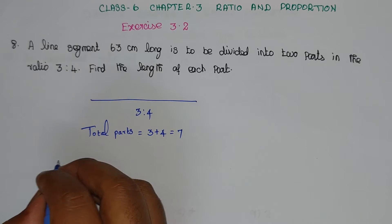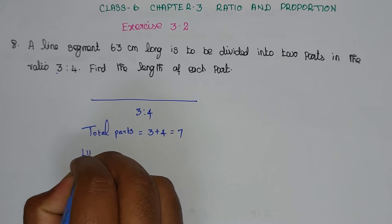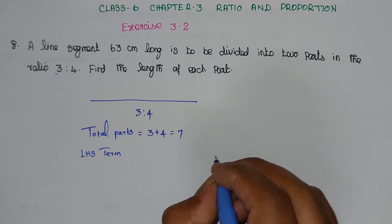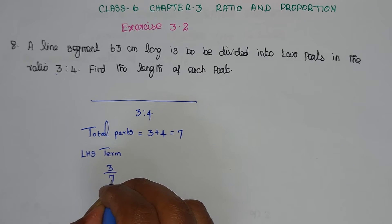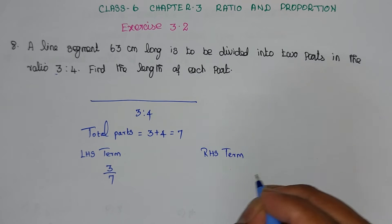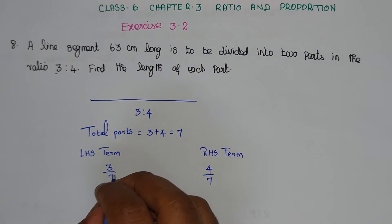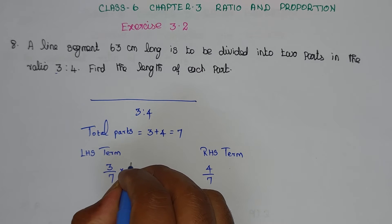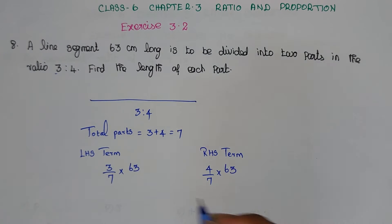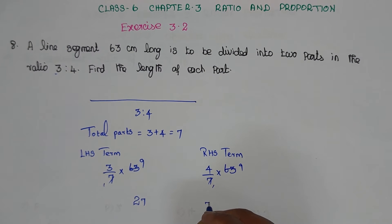Total parts equal to 3 plus 4 equals 7. First, let's look at the LHS: 7 parts. RHS: 4 by 7, total 7 parts, into 63 cm. 63 divided by 7 equals 9. So 3 times 9 equals 27, and 4 times 9 equals 36.